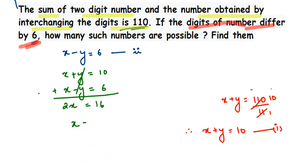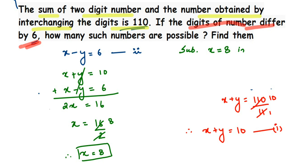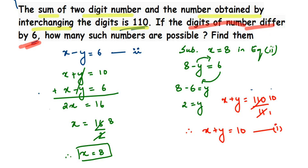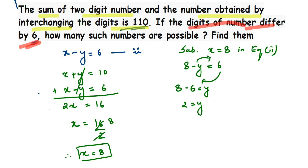We have to find x from 2x = 16, so x = 16 ÷ 2 = 8. Therefore, the digit in the tens place is 8. Now substituting x = 8 into the second equation: 8 − y = 6. Transposing, y = 8 − 6 = 2. So y = 2. We now have both digits: x = 8 and y = 2.